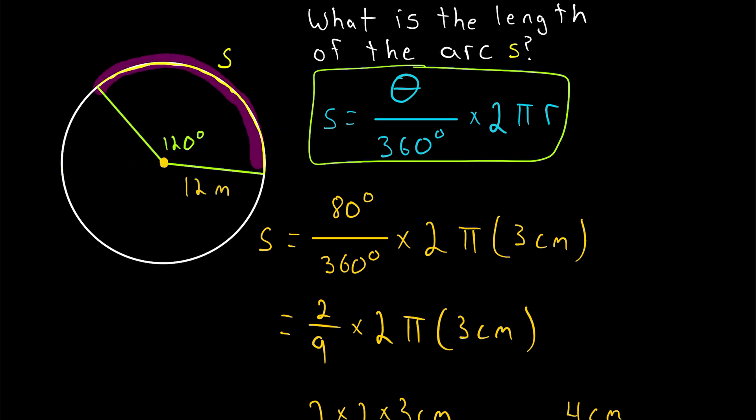Finally, here's a practice problem to try on your own. We've got a circle with a radius length of 12 meters and a central angle with a measure of 120 degrees. Find the length of the arc cut by the angle. Let me know what you get down in the comments, and I'll leave the solution in the description.